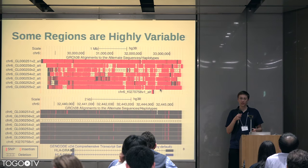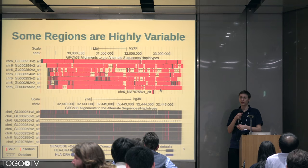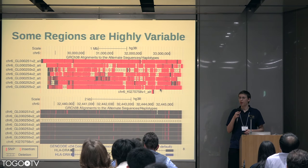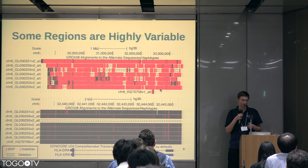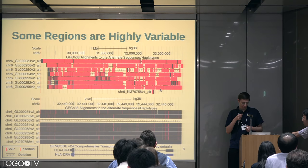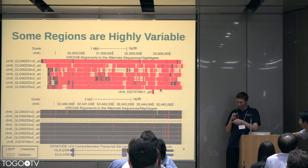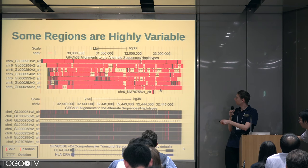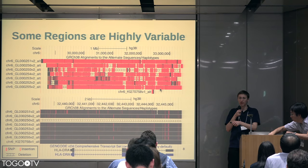This is a picture of the UCSC Genome Browser looking at the major histocompatibility complex, which is a very variable genomic region to do with the immune system. You can see here, this is an alignment where your reference defines the space, and then there are the different alt-loci that are present in the GRCh38 assembly.